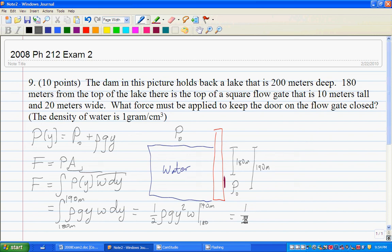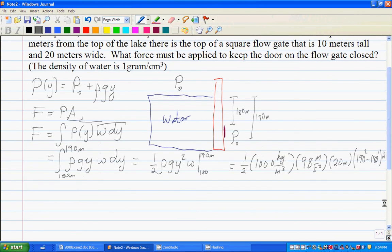And if we plug and chug numbers, we get 1.5 times, okay, the density of water is 1 gram per cubic centimeter, which turns into a thousand kilograms per cubic meter. Make sure you attempt the dimensional analysis if that's not instantly obvious to you, which it wouldn't be to me. g is 9.8 meters per second squared. I'm going to throw the w in, which is 20 meters. And we're going from 190 squared to 180 squared. And the units out here will be a meter squared.